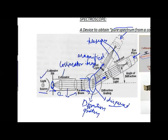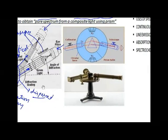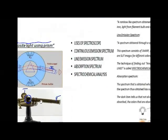The spectroscope has a collimator, a diffraction grating, and telescopes on a circular base, with lenses V1 and V2. Light passes through the lens, dispersion occurs, and this can be viewed through the telescope.